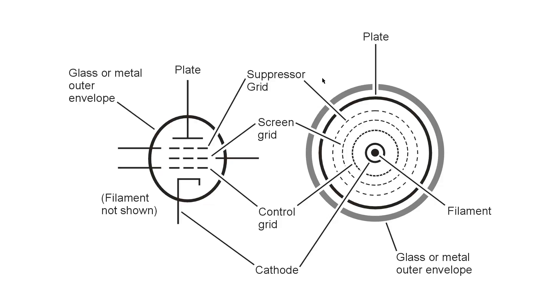If you could just take a saw, a very sharp carborundum saw that wouldn't shatter the glass or metal or destroy the envelope and just saw right through it and look at the elements, you'd see a concentric pattern. The filament would be at the very center which heats the cathode, or in the case of a directly heated cathode, the filament and the cathode are the same element.